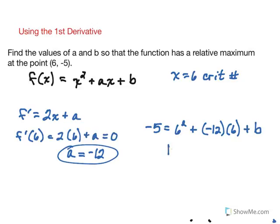So if you go ahead and solve that out, I'll let you do the number crunching, you should find that b is 31. So there's the other value you need.